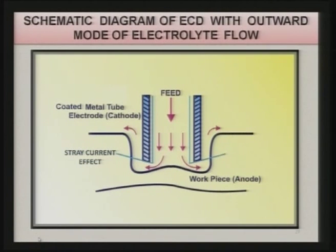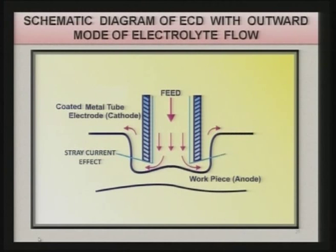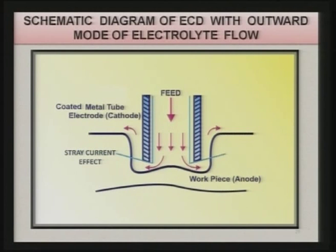The coating is clearly shown in the diagram — this is the outward mode of electrolyte flow. Electrolyte enters through the central hole of the tool and exits from the side of the hole. You can clearly see there is some stray current effect, which is why you are not getting a flat surface at the ends — they are slightly tapered.